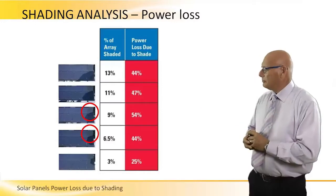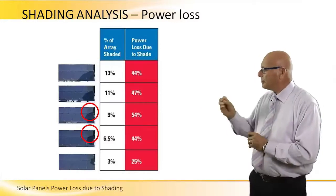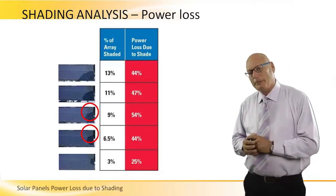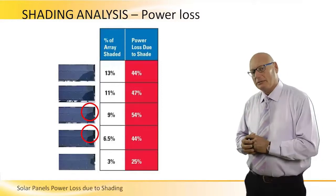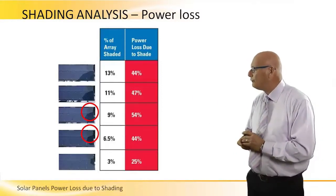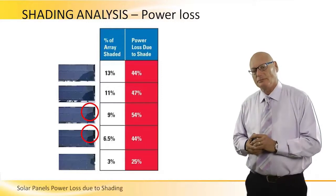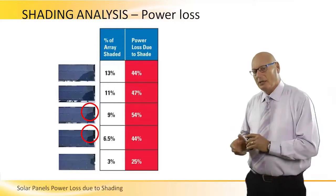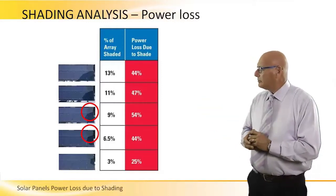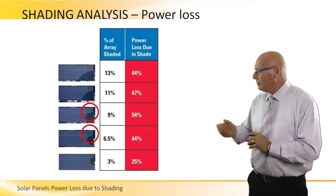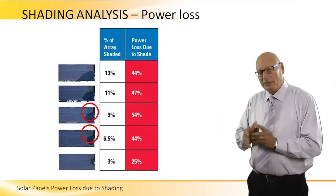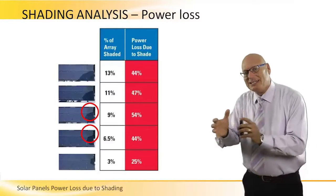In the top picture, 13% of an array is being shaded, but that causes 44% power loss. The next example shows 11% of the shaded array causes 47% power loss. It depends where the shade is.